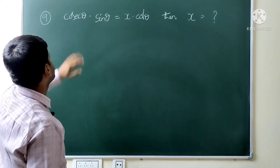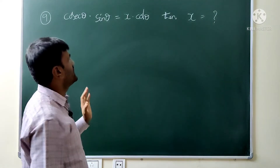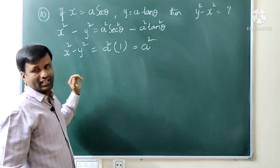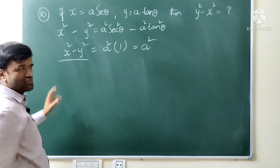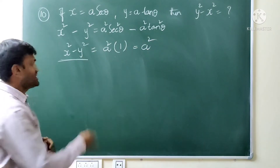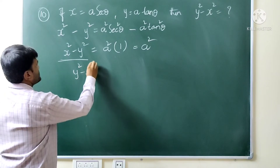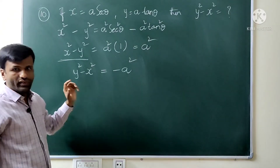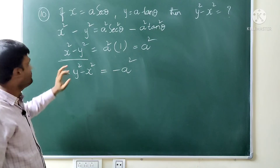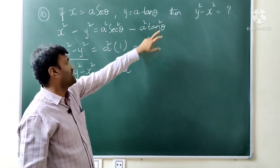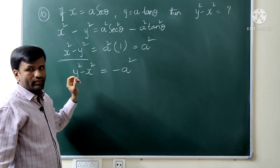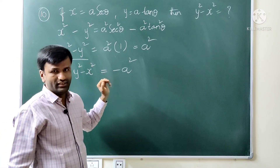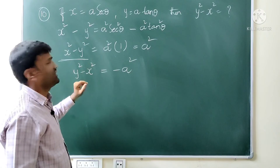Ninth question: cos θ times sin θ equals x times cot θ, then x equals what? Working through this, we get x² minus y² — but note the question asks for y² minus x², not x² minus y². So reverse by taking minus as common. Students commonly make this mistake: they get the right working but give x² as the answer without noticing the question asks y² − x².